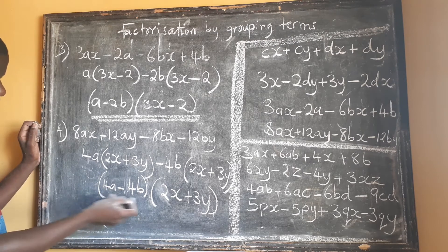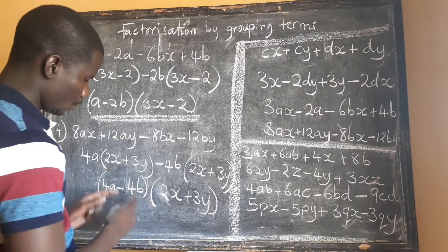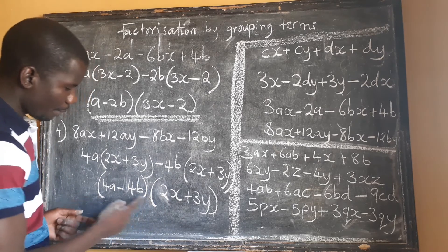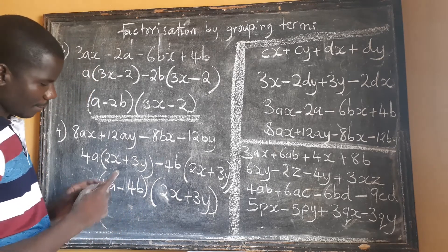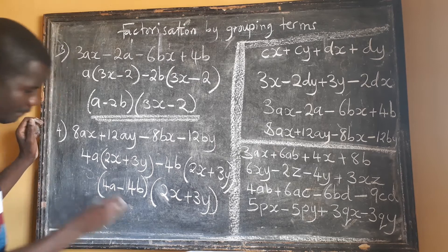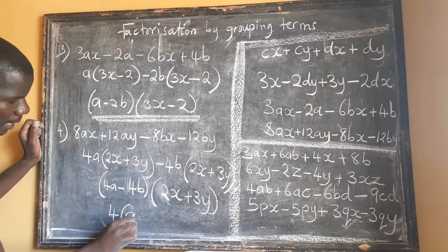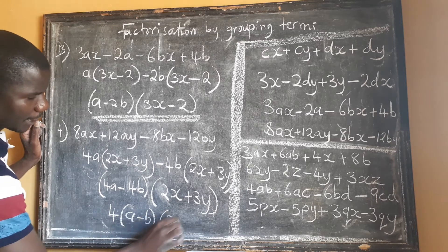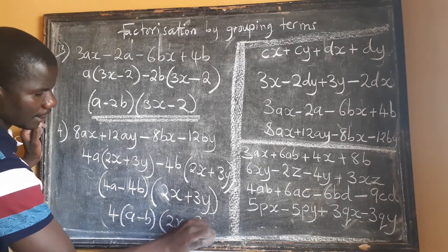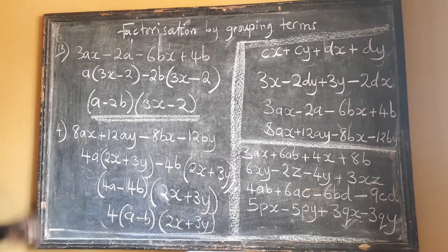Now when we look at this factor, we still have a common factor in (4a - 4b), so we can go further to completely factorize. Four is common, giving us 4(a - b). The complete final answer is therefore 4(a - b)(2x + 3y).